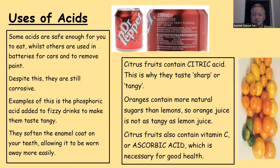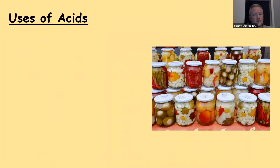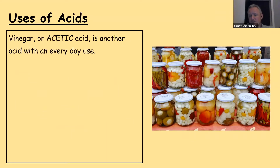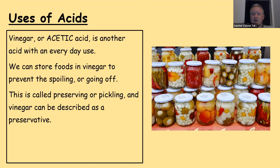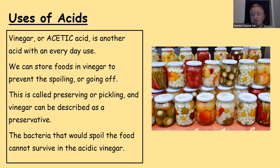Oranges don't taste as sharp as lemons and limes because they contain more natural sugars. But citrus fruits contain another acid — vitamin C, or ascorbic acid — which is necessary for our continued good health. Vinegar, or acetic acid, is another acid with an everyday use. We store foods in vinegar to prevent them spoiling — this is called preserving or pickling. This is because the bacteria that would spoil the food can't survive in the acidic vinegar, so the food stays fresher for longer.